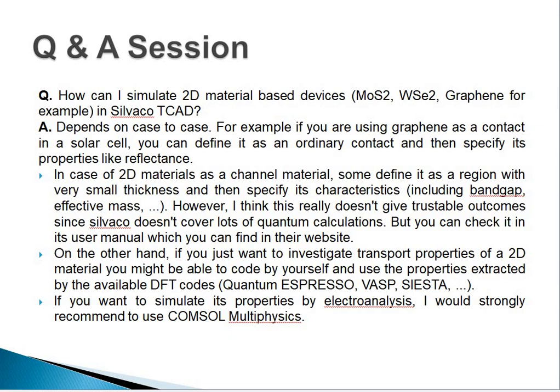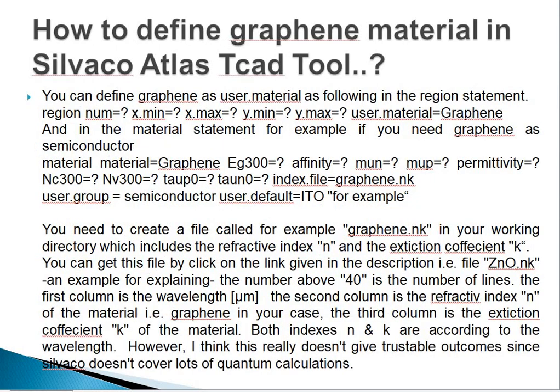Available DFT codes include QuantumExpresso, VASP, and Siesta. If you want to simulate its properties by electrostatic analysis, I would strongly recommend using COMSOL Multiphysics software. To define graphene material in Silvaco Atlas, you can define graphene as a user material as follows in the region statement: region number with positional parameters, user.material=graphene.